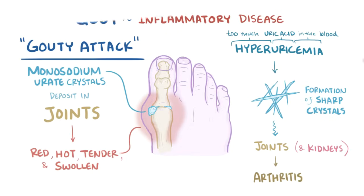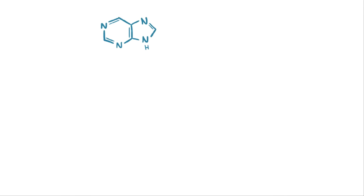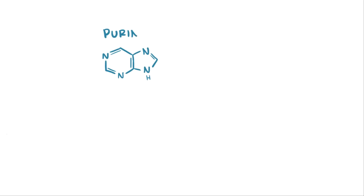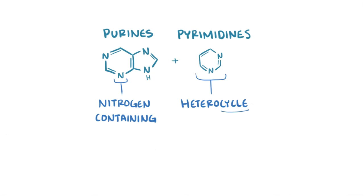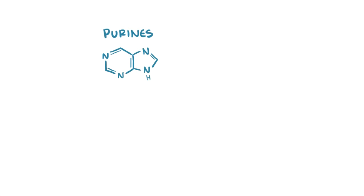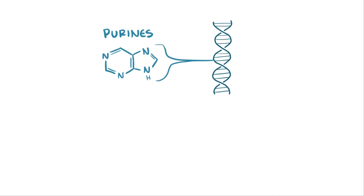To understand where the uric acid comes from, let's start with purines, which together with pyrimidines are nature's most common nitrogen-containing heterocycles. A heterocycle is a molecular ring with different types of atoms. Purines, as well as pyrimidines, are key components of nucleic acids like DNA and RNA.